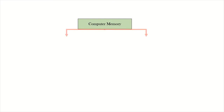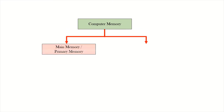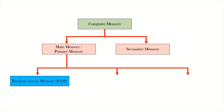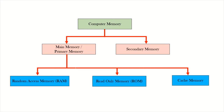Computer Memory is divided into: Main Memory or Primary Memory, Secondary Memory, Random Access Memory, Read Only Memory, and Cache Memory.